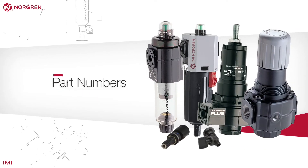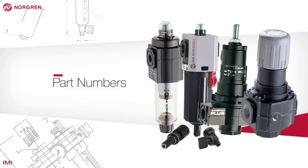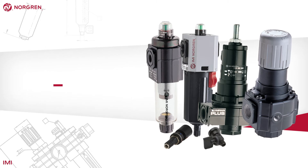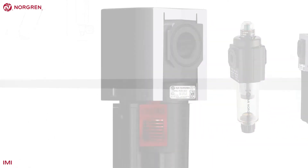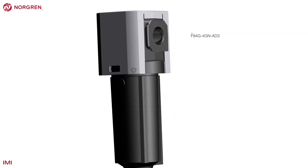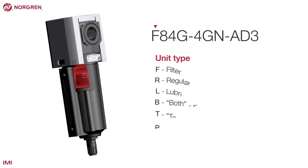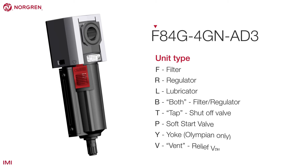Norgren has a formula for creating part numbers. This applies across the new range but is especially relevant in air preparation products. Let's look at a part number. The first digit represents the type of unit — in this case, a filter.